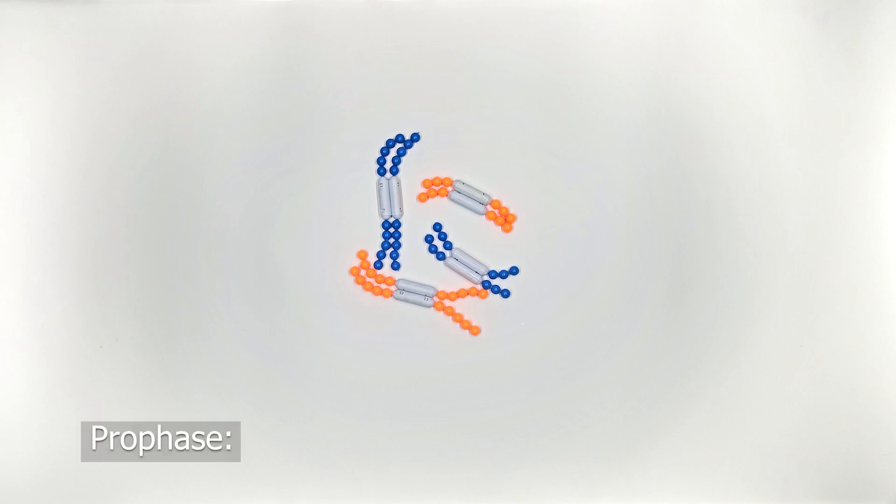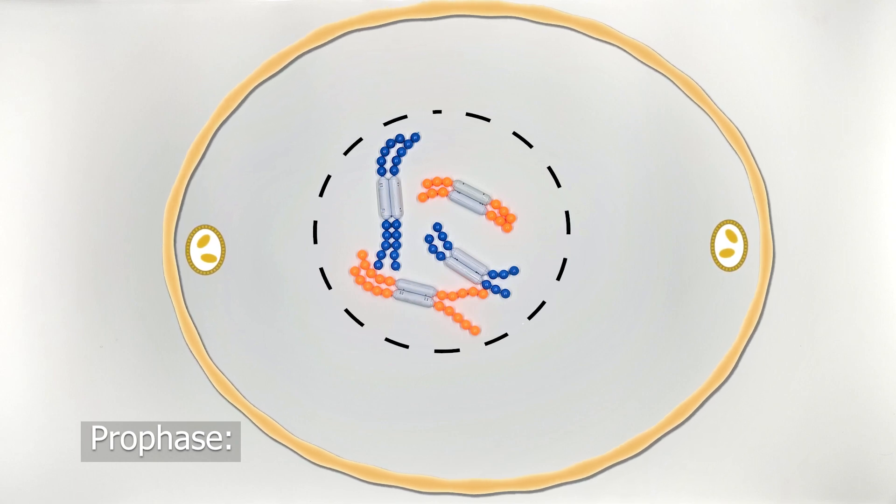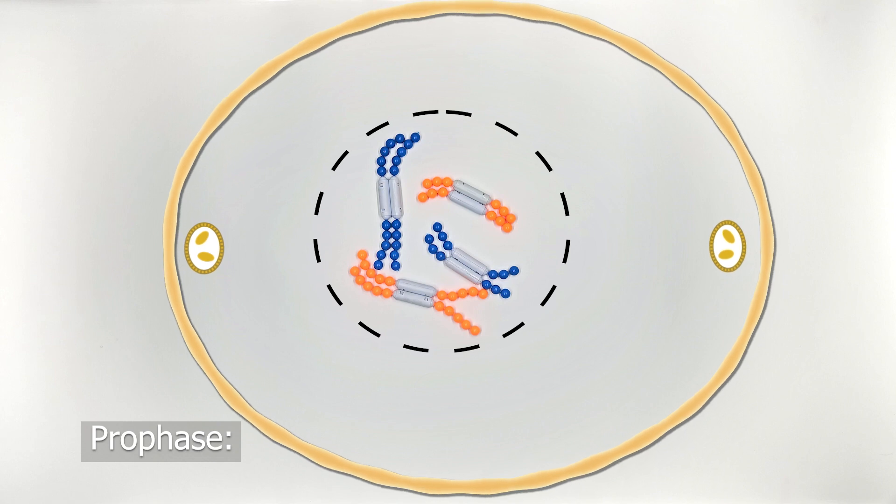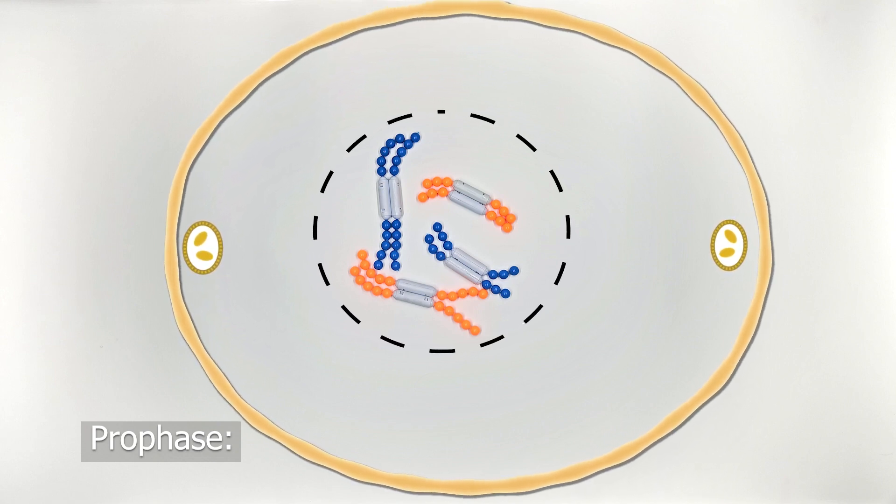We begin with prophase, and what we're noticing is that the chromosomes are distinct, so the chromatin has condensed into chromosomes. There isn't any particular order or pattern that these chromosomes are present in.